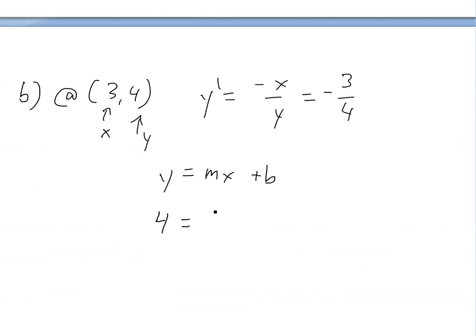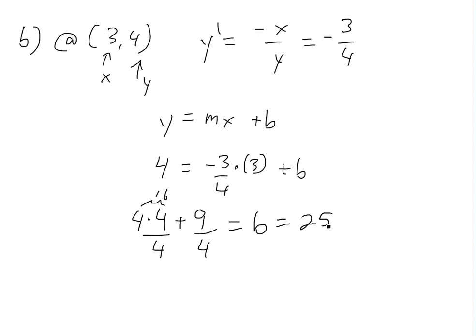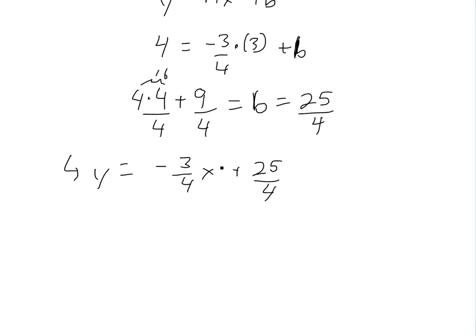To find the equation of the tangent line in the form y equals mx plus b, we know the slope m is negative three over four and we know the point (3, 4). Plugging in: 4 equals negative three over four times three plus b. That gives 4 equals negative nine over four plus b. Multiplying through by 4: 16 plus 9 equals 25, so b equals 25 over 4. Our final answer is y equals negative three over four times x plus 25 over four, or equivalently 4y plus 3x equals 25.